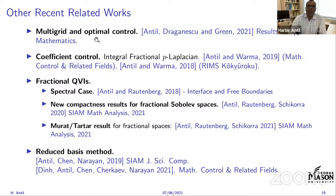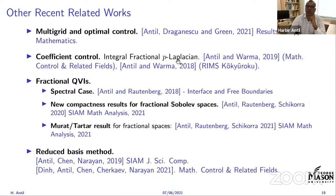Additional related work includes multigrid methods for optimal control problems — joint work with Andre Draganescu at UMBC and PhD student Kiefer Green — as well as optimal control for the fractional p-Laplacian and coefficient identification, and efficient reduced-basis methods for quasi-variational inequalities.